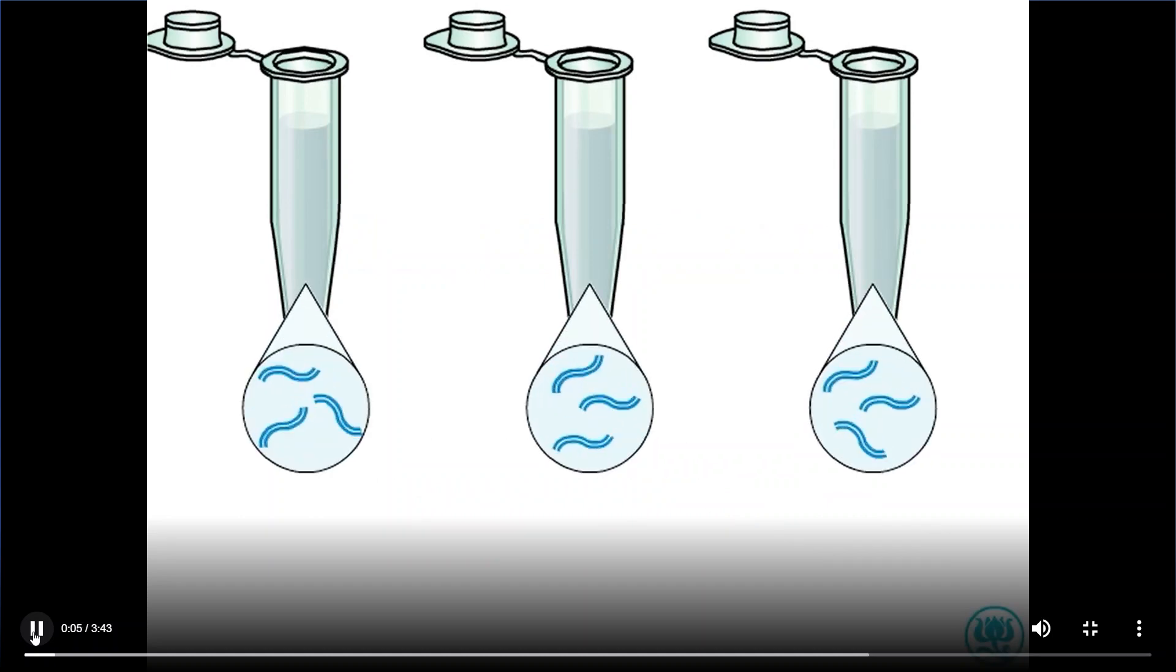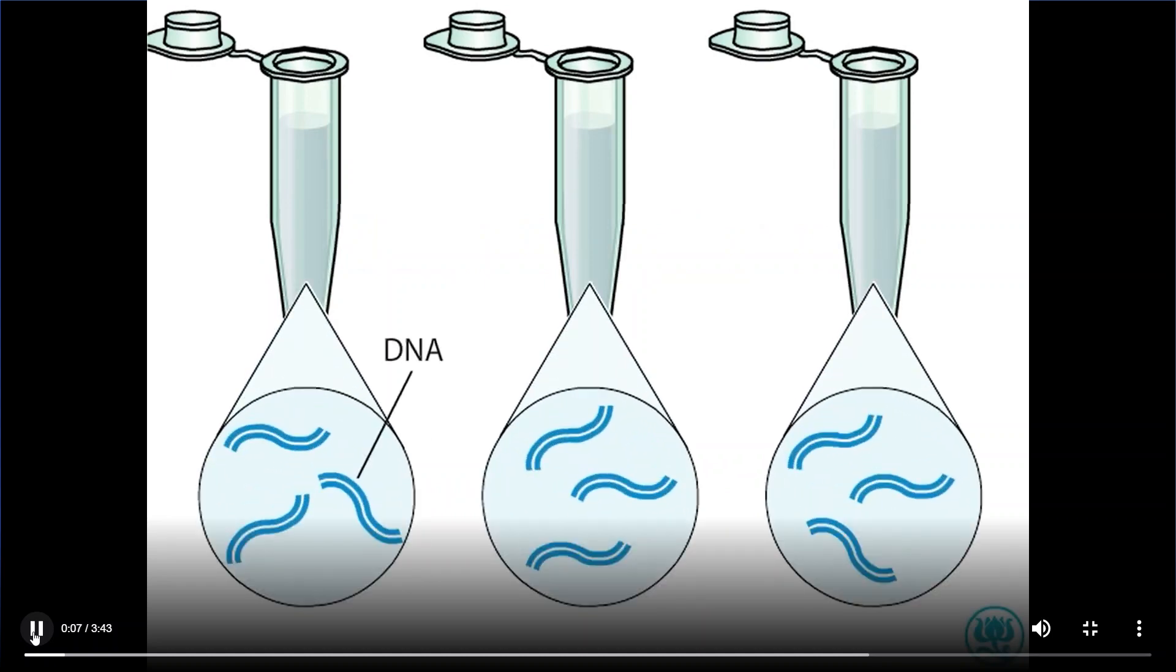These tubes contain identical DNA fragments, but they will be cleaved with different restriction enzymes to yield fragments of different sizes. Enzyme 1 cuts the DNA into fragments A and B, which we color for tracking purposes.